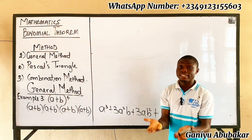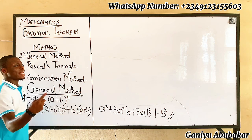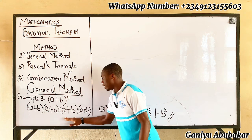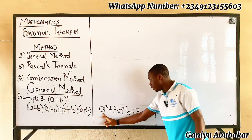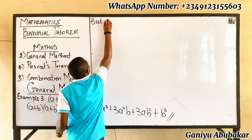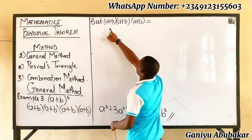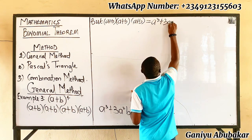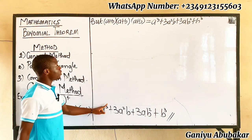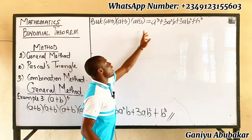We have four expressions. We already know from example two that (a + b) × (a + b) × (a + b) gives a³ + 3a²b + 3ab² + b³. So I'm left with one more expression. I'll now multiply (a + b) by that cubic result: (a + b)(a³ + 3a²b + 3ab² + b³).